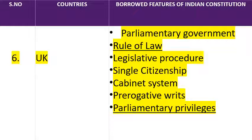Next है Single Citizenship — यानि कि we the people of India। हम भारत के लोग, हम भारत के नागरिक हैं। ऐसा नहीं है कि अगर हम अलग-अलग state में रहें तो अलग-अलग state की भी हमें citizenship मिले। हमें single citizenship दी गई है — वो है Indian — भारती। Single citizenship का concept UK constitution से लिया गया है। Next है Cabinet System — वो भी UK से borrow किया गया है।